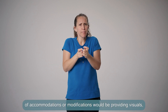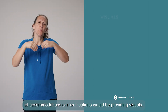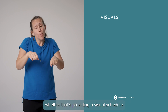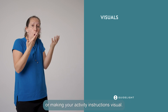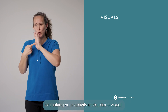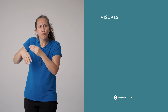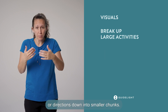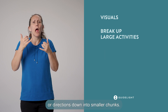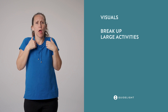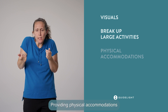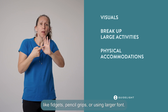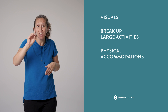Examples of accommodations or modifications would be providing visuals — whether that's providing a visual schedule or making your activity instructions visual — breaking multi-step activities or directions down into smaller chunks, or providing physical accommodations like fidgets, pencil grips, or using larger font.